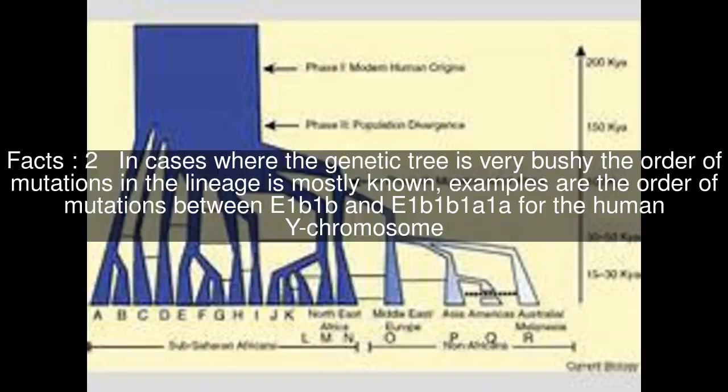In cases where the genetic tree is very bushy, the order of mutations in the lineage is mostly known. Examples are the order of mutations between E1B1B and E1B1B1A1A for the human Y chromosome.